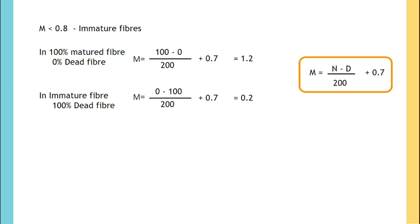Relation between degree of thickening and maturity ratio is expressed as theta = 0.577M.